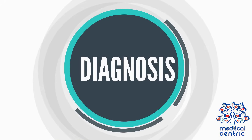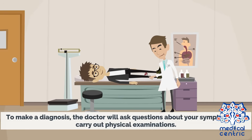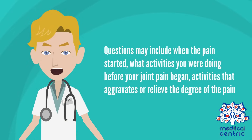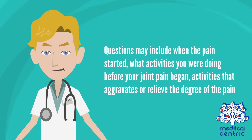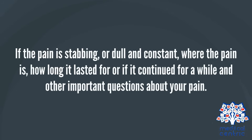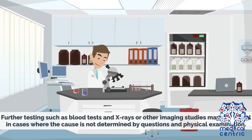Diagnosis and Treatment: To make a diagnosis, the doctor will ask questions about your symptoms and carry out physical examinations. Questions may include when the pain started, what activities you were doing before your joint pain began, activities that aggravate or relieve the degree of the pain, if the pain is stabbing or dull and constant, where the pain is, and how long it lasted. Further testing such as blood tests and x-rays or other imaging studies may be helpful in cases where the cause is not determined by questions and physical examination.